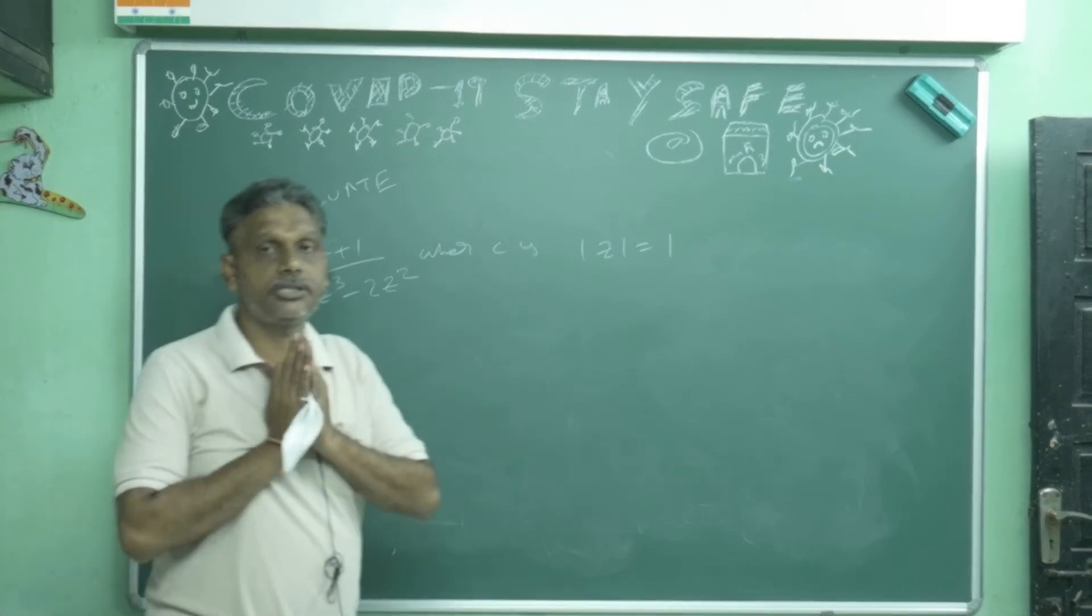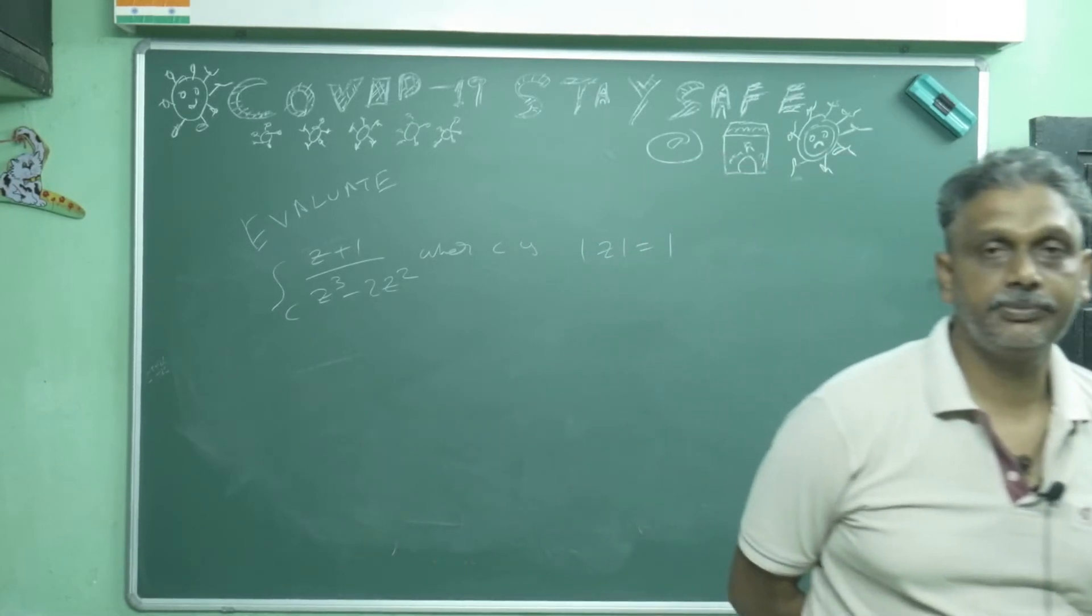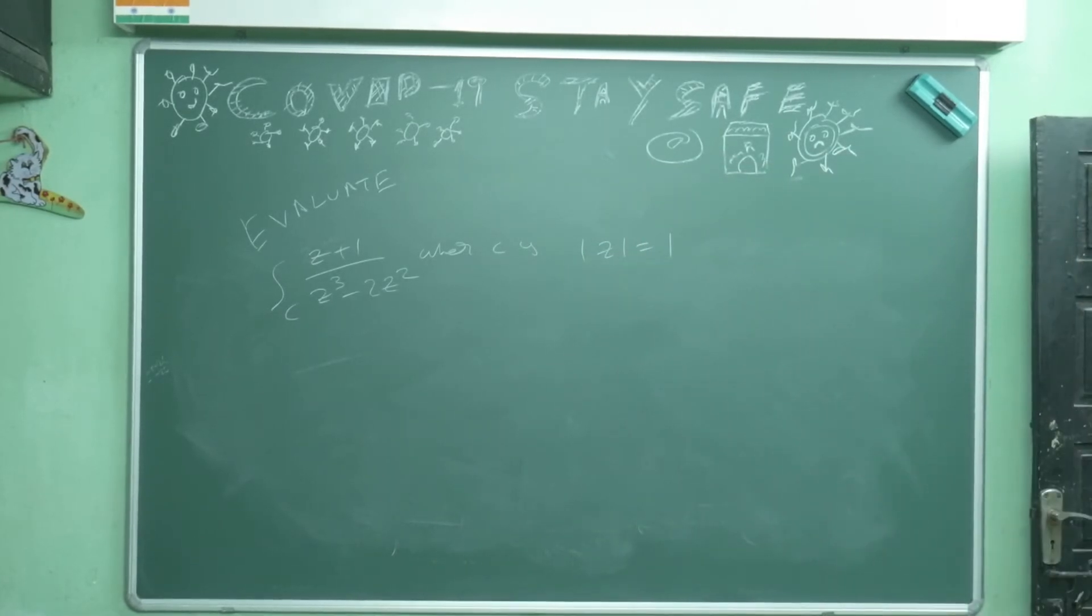Hi friends, this is your Dr. B.P., alias Dr. Bapuji Pillepu. See this problem also uses derivative formulas. Evaluate the integral over c of (z+1) divided by z cubed minus 2z squared.